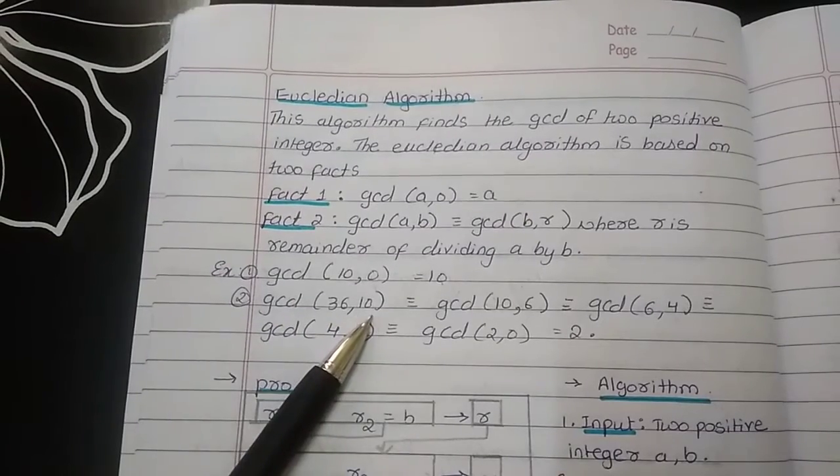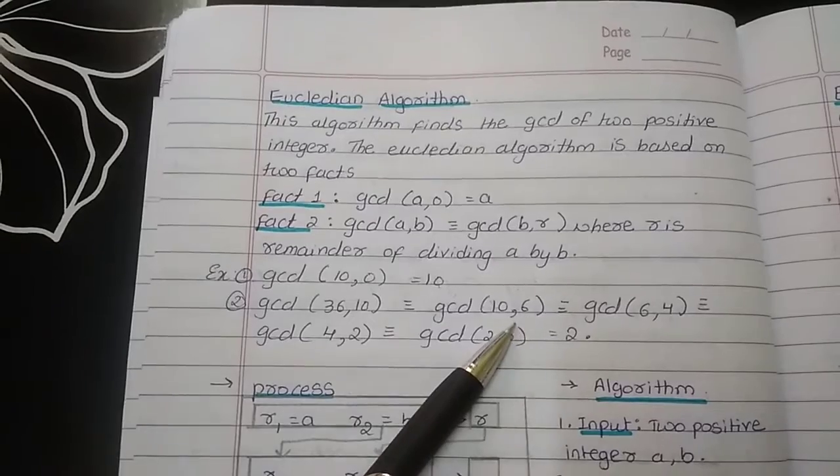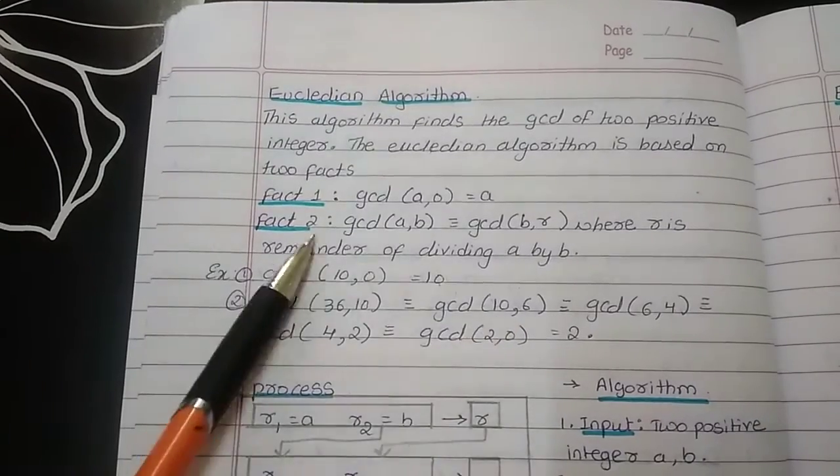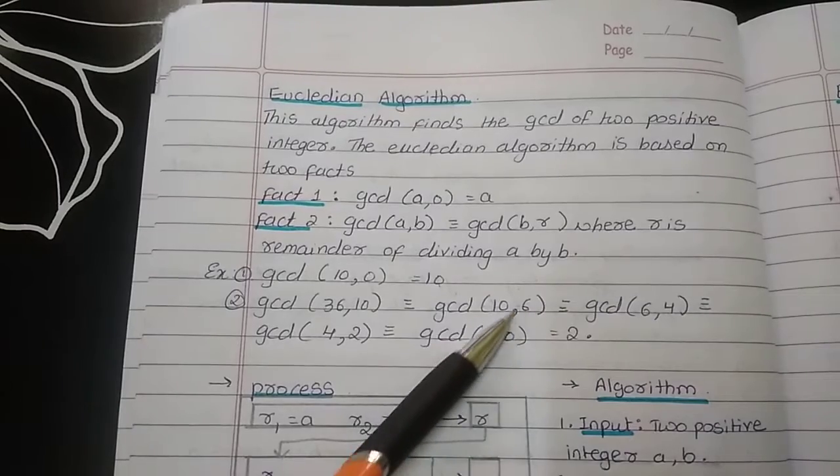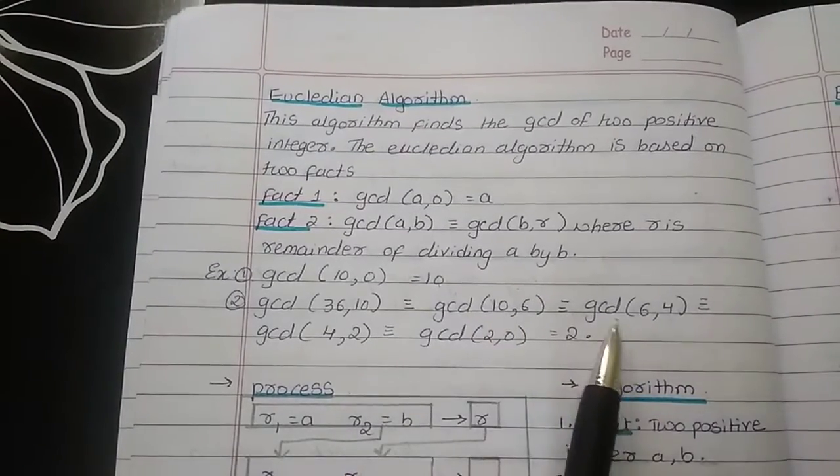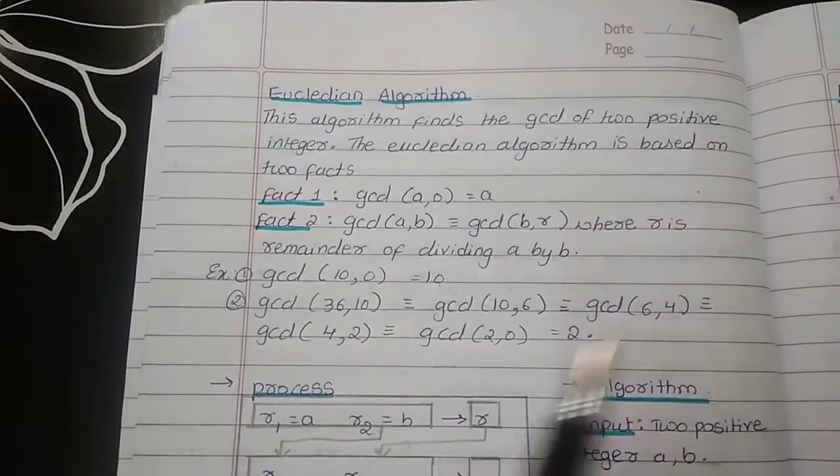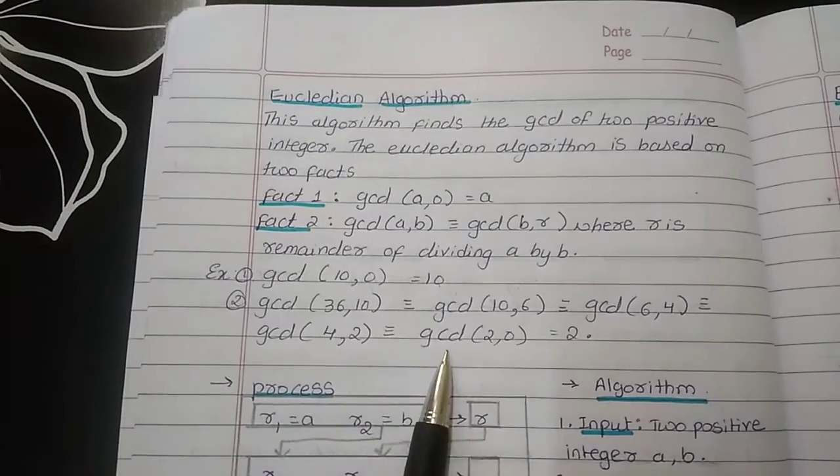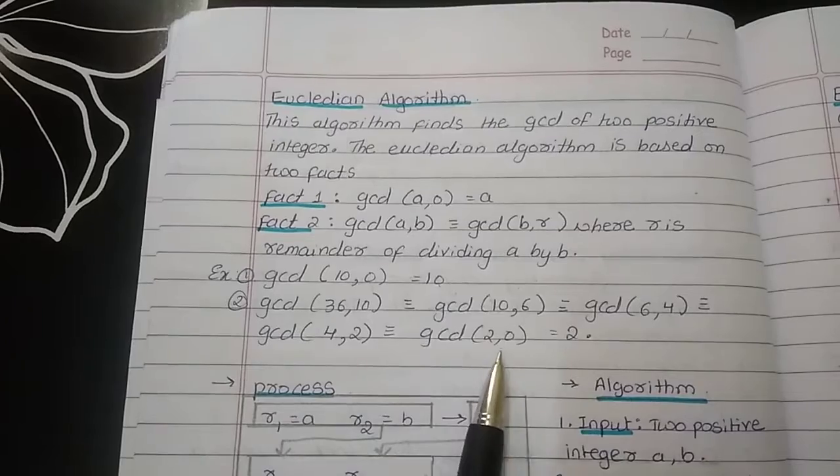Next, GCD of 36, 10 can be written as GCD of 10, 6. Here I have written according to fact 2. Since I can still divide it, I can write GCD of 10, 6 as GCD of 6, 4. Again, I am using fact 2. This process will continue unless I am getting the GCD of 2, 0.